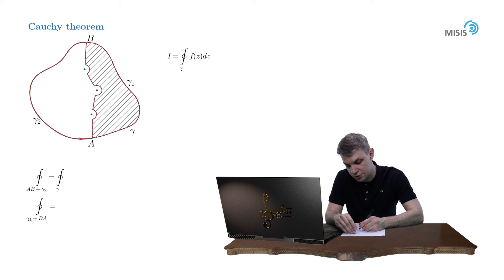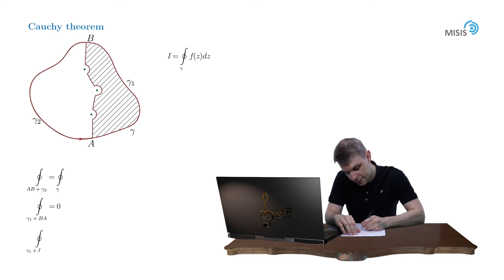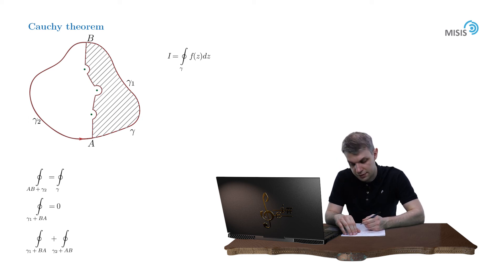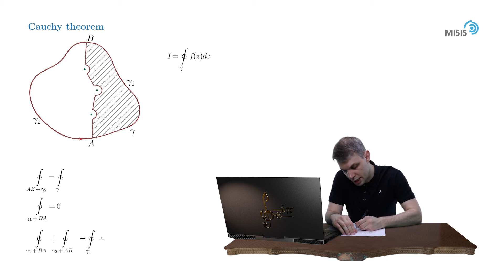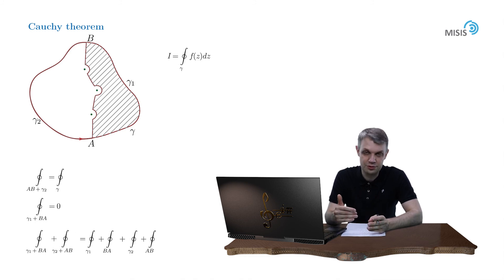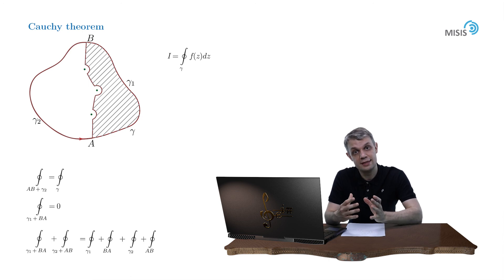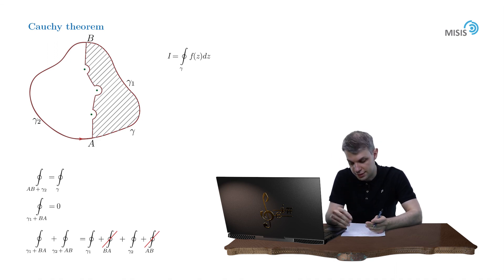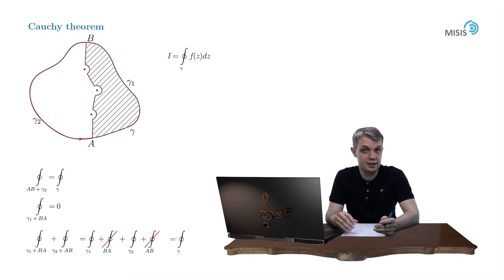That integral vanishes due to the Cauchy integral theorem. Now consider the sum of two integrals: the integral along gamma 1 plus b·a, and the integral along gamma 2 plus a·b. Splitting these, the integrals along b·a and a·b cancel each other because they are identical integrals passed in opposite directions. So the sum equals the integral along gamma 1 plus gamma 2, which is nothing but our initial contour gamma. This completes the proof.